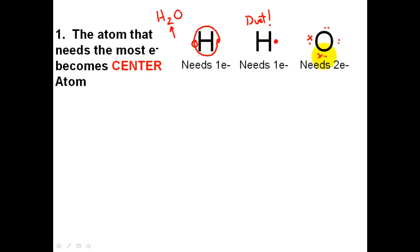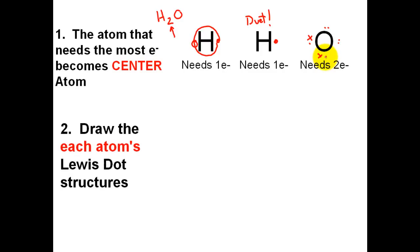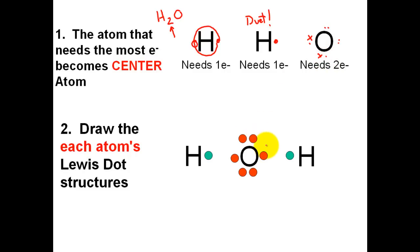So once again, the atom that needs the most electrons in order to get to an octet becomes the center atom. We're going to redraw this — the center atom is oxygen. Oxygen needs two electrons. It's going to need an electron right there and also an electron right there. Hydrogen only needs one, so I will draw hydrogen on the outsides. I'm aligning the single electrons together for future use.